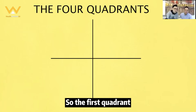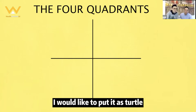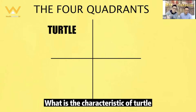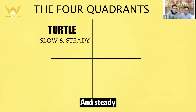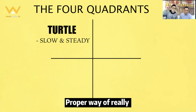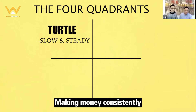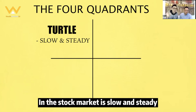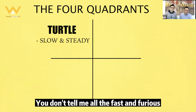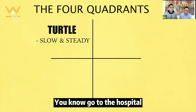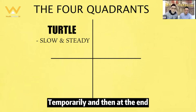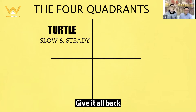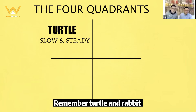The first quadrant I would like to put as 'Total' — the characteristic of Total is slow and steady, the proper way of consistently making money in the stock market. You don't go fast and furious — fast and furious will either give you a heart attack or make you rich temporarily, and then you lose it all back.